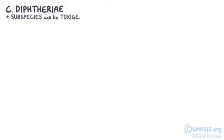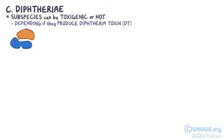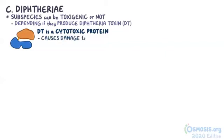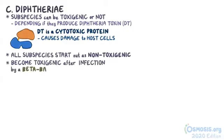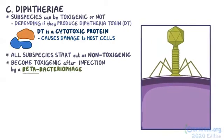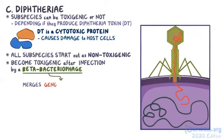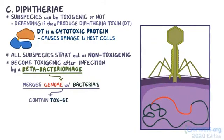Any of the C. diphtheriae subspecies can be either toxigenic or not, depending on whether or not they produce the diphtheria toxin, or DT for short. DT is a cytotoxic protein, meaning it causes damage to host cells. All C. diphtheriae subspecies start out as non-toxigenic, but they become toxigenic after they're infected by a beta bacteriophage — a kind of virus that attaches to the bacteria and merges its own genome with the bacteria's. The beta bacteriophage genome contains tox genes, which code for diphtheria toxin production.